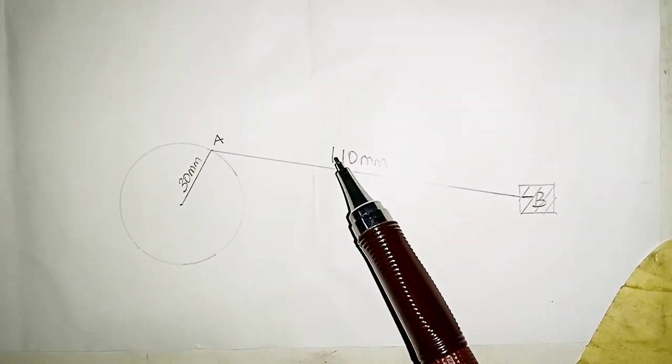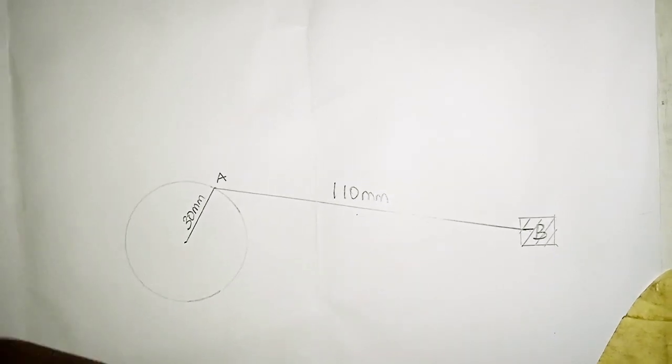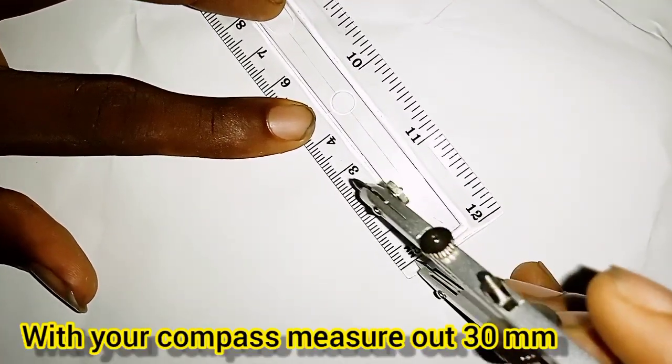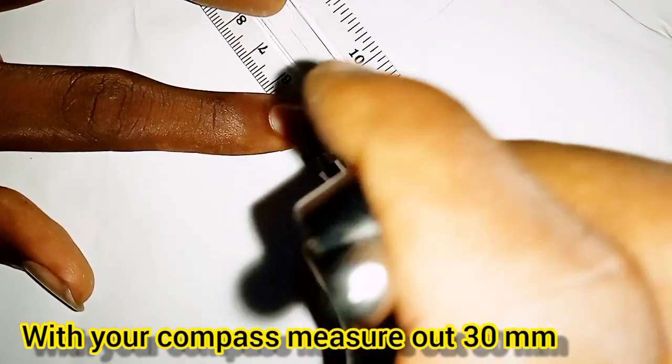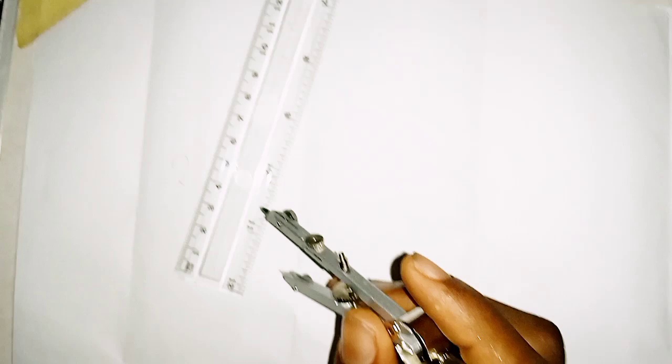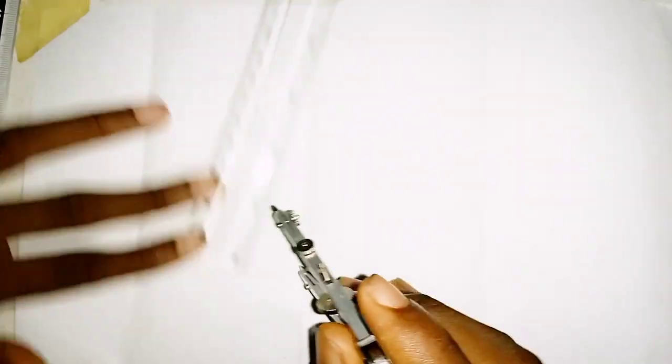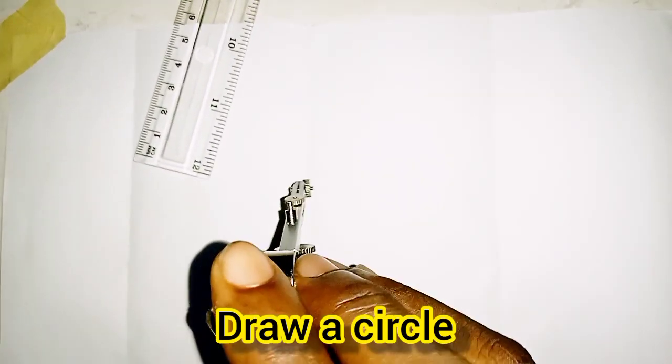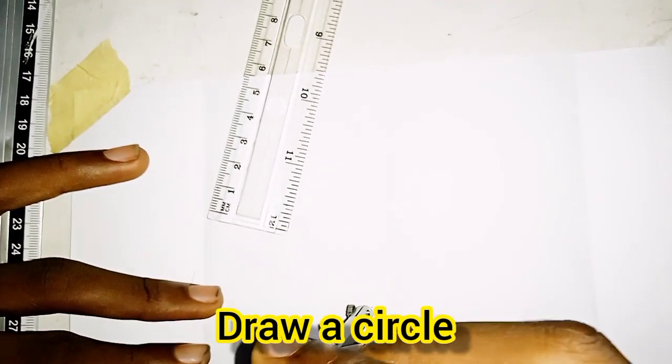And this part is 110 millimeters. Let's go to our diagram. The first thing we need to do is measure 30 millimeters. This is 30, then come over here and draw a circle of 30 millimeters.